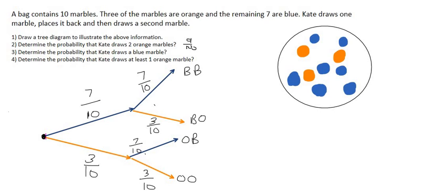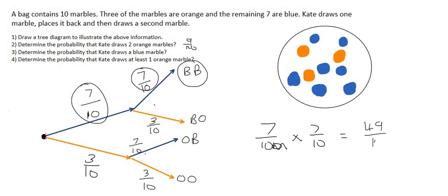Number three, determine the probability that Kate draws two blue marbles. So that's the BB branch. That's seven over ten multiplied by seven over ten, and that's going to give us forty-nine out of a hundred. So her chances of getting two blues is forty-nine percent and her chances of getting two oranges was 0.09, which is about nine percent. So her chances of drawing two blues are much higher, and that makes sense because there's more blues in the bag than orange.